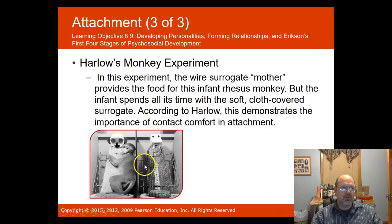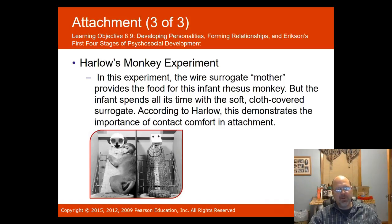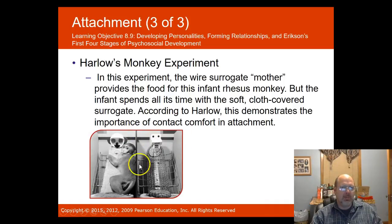Harlow took the experiment further — when infant monkeys had no soft cloth-covered surrogate and did not bond at all, the rhesus monkeys stopped developing normally to the point where they lost their instinctual behaviors and could not function well when returned to the wild. This demonstrated the critical need for bonding in early development.